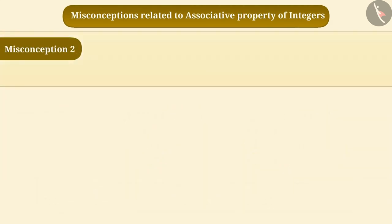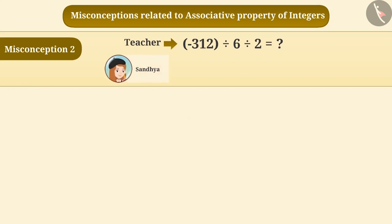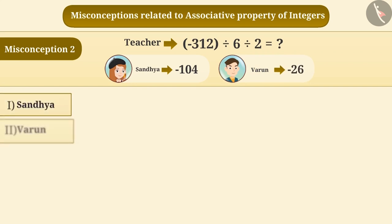Misconception 2. After teaching associative property of integers, the teacher gave a question for homework. What is the value of minus 312 divided by 6 divided by 2? Sandhya has obtained the answer as 104 and Varun has obtained the answer as minus 26. Who is correct in your opinion?